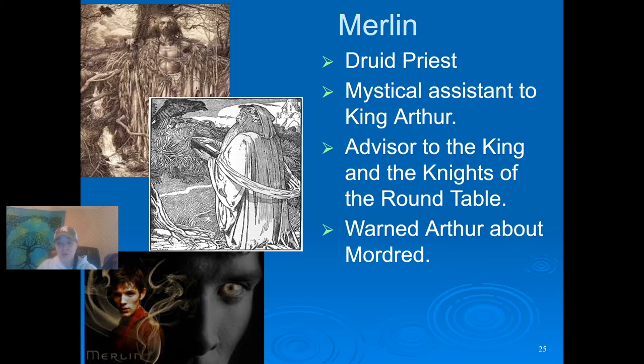Merlin also received credit for being responsible for the moving of Stonehenge, which was then known as the Giant's Ring. He moved it from Mount Killaraus in Ireland to its current place in Salisbury Plain for two reasons: one was for the stones to be a monument to those who had died in battle with the Saxons, and the second was because the stones possessed great powers of healing. In Sir Thomas Malory's Le Morte d'Arthur, Merlin is represented as an advisor to King Arthur, and Alfred Lord Tennyson portrays Merlin as an architect of Camelot.